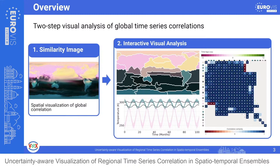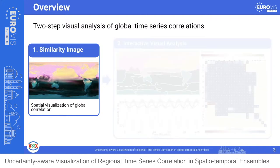In the second step, we propose an interactive analysis of correlations among spatial regions based on the similarity image. We start by creating a hierarchical segmentation of the image, working on segments and their corresponding segment means, which significantly reduces computational costs. The resulting data can be analyzed in three interactively linked visualizations: a heatmap showing the probability of correlation in the ensemble as well as time lags, a segmentation visualization providing spatial information, and an uncertainty-aware time series plot for in-detail investigation.